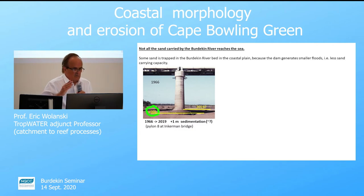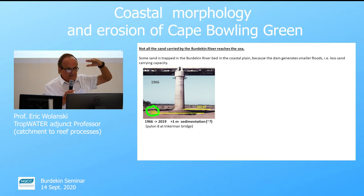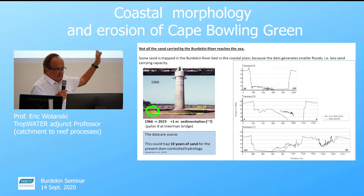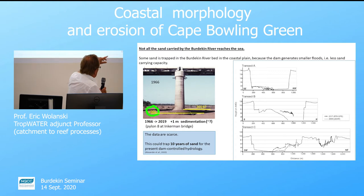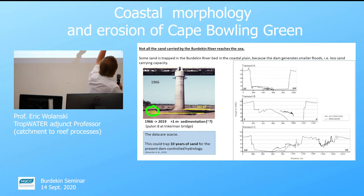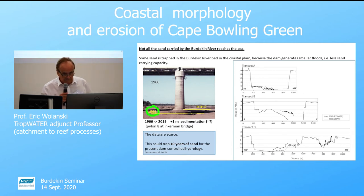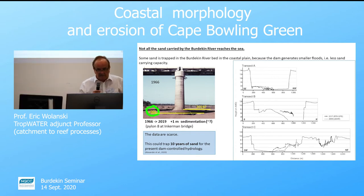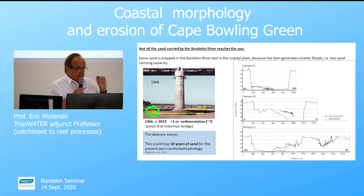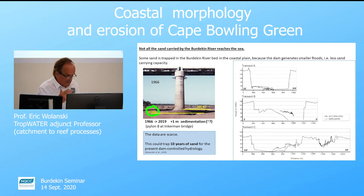There's not much data, but we have some data at the bridge in Home Hill, which suggests the bed has risen about one meter. There's data from a tree cross-section downstream from the bridge showing the level of the bed in 2009 and in 2017. In some cases, like the lobe in the middle, the bed has risen up to about two to three meters; in other places much less, and some places unchanged. But taking an average of all the data, it looks like about 10 years' worth of sand supply does not reach the sea — it's trapped in the riverbed, largely because of the dam.